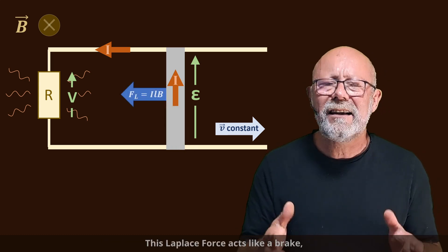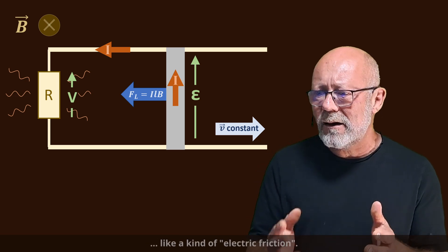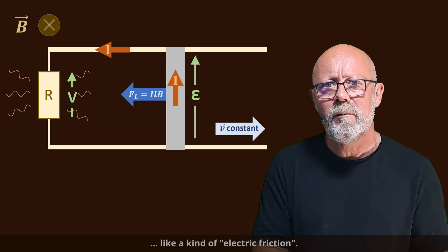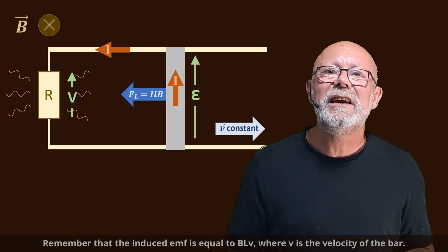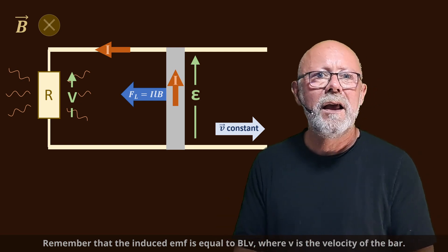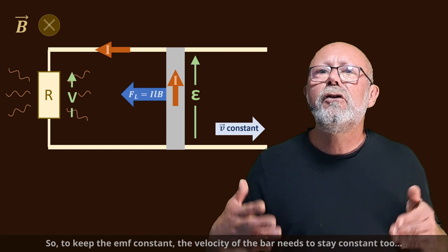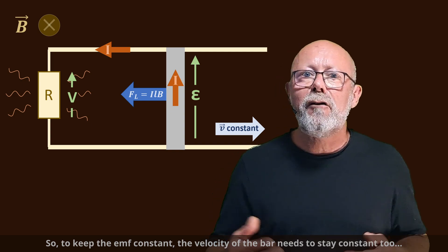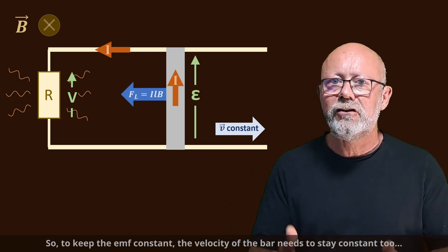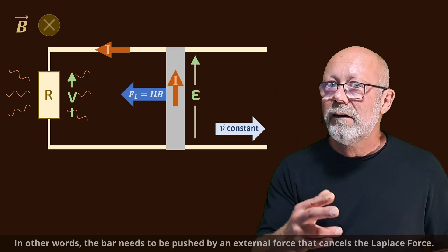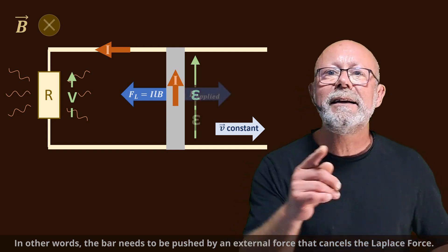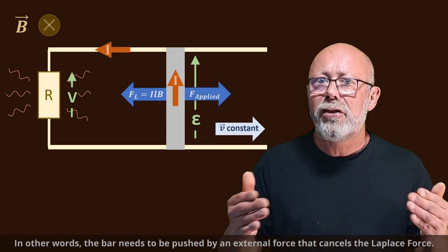This Laplace force acts like a brake, like a kind of electric friction. Remember that the induced EMF is equal to BLV, where V is the velocity of the bar. So to keep the EMF constant, the velocity of the bar needs to stay constant too. In other words, the bar needs to be pushed by an external force that cancels the Laplace force.